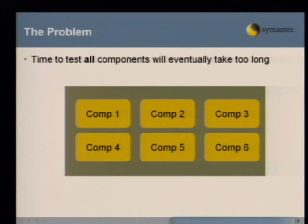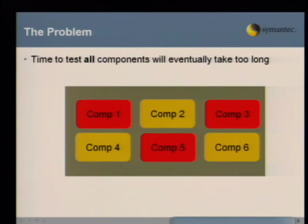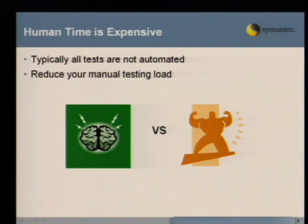When you run into this situation, how do you determine what you should be testing? Another facet of the problem: a lot of times regression testing tests all components when in reality maybe only a few are changing — essentially wasted time and effort. Certainly there may be dependencies between components, but those dependencies are things that can be learned in terms of test selection. Also, not all tests are automated. In time-constrained situations, reducing your manual test load becomes incredibly important.